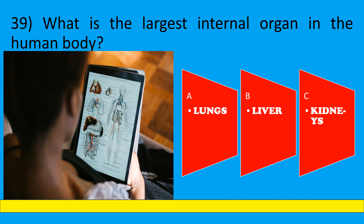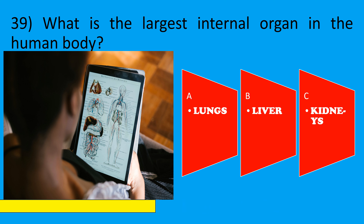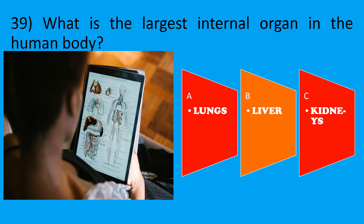What is the largest internal organ in the human body? A: Lungs, B: Liver, C: Kidneys. The correct option is B, Liver.